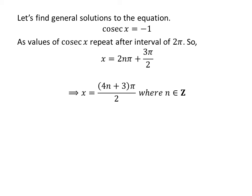Further simplification gives us the general solution as 4 times n plus 3, times pi upon 2.